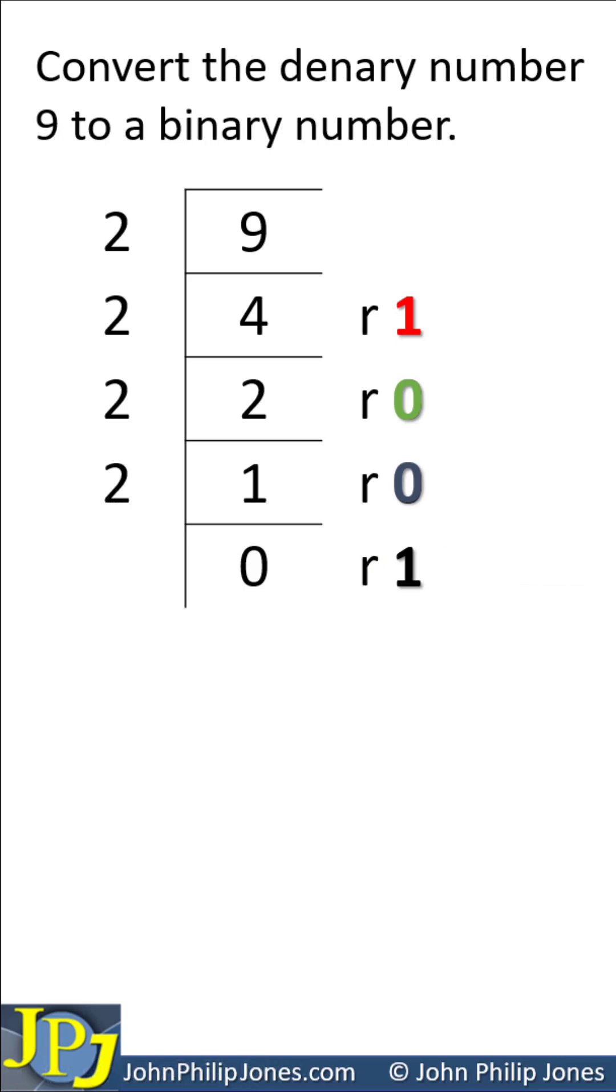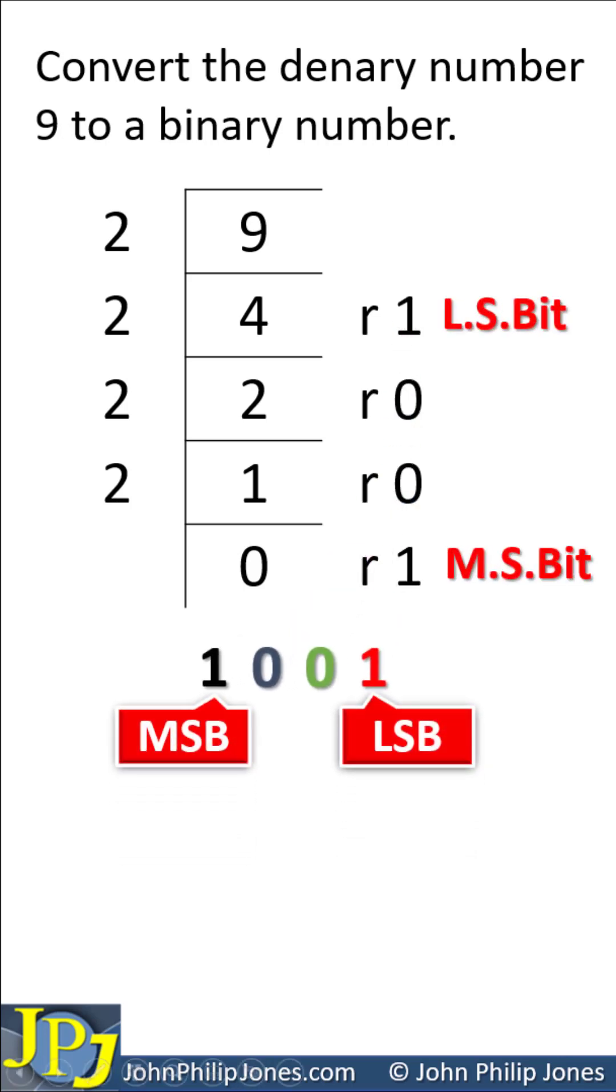Then we write the binary number down as you can see here and you can note the least and the most significant bit positions. So we can conclude by showing that 9 is equal to 1001.